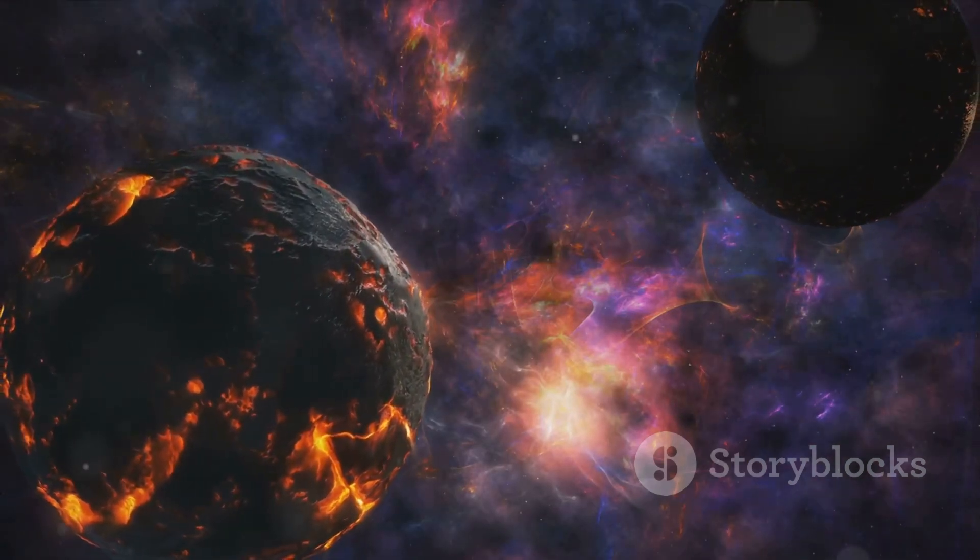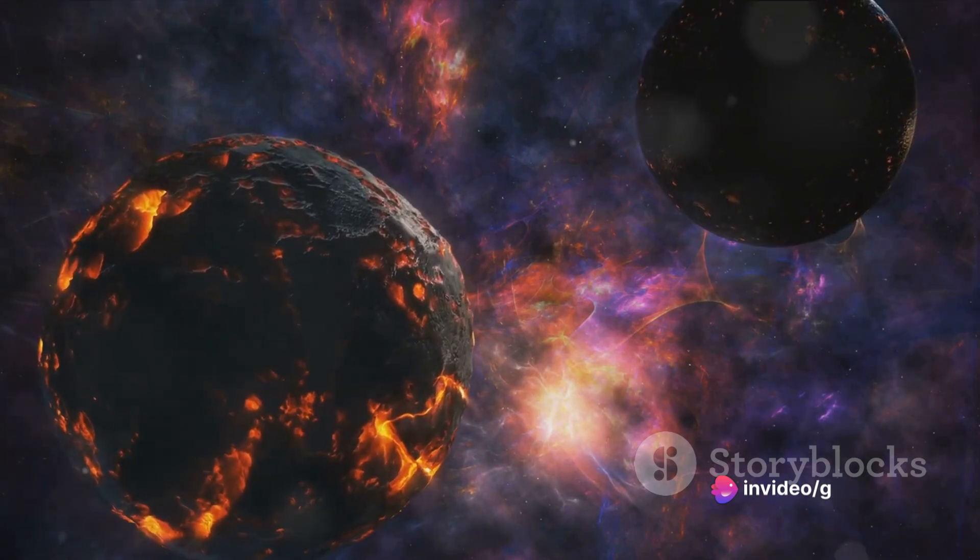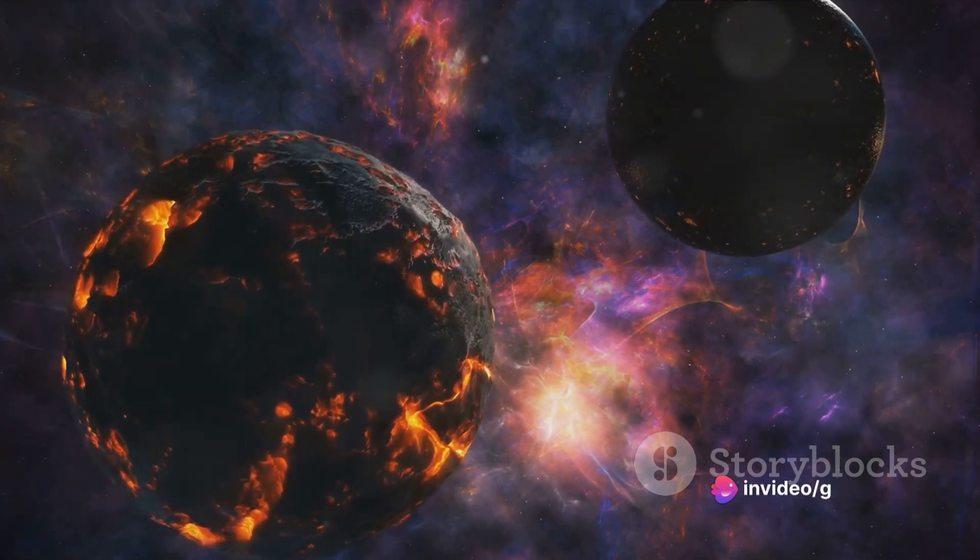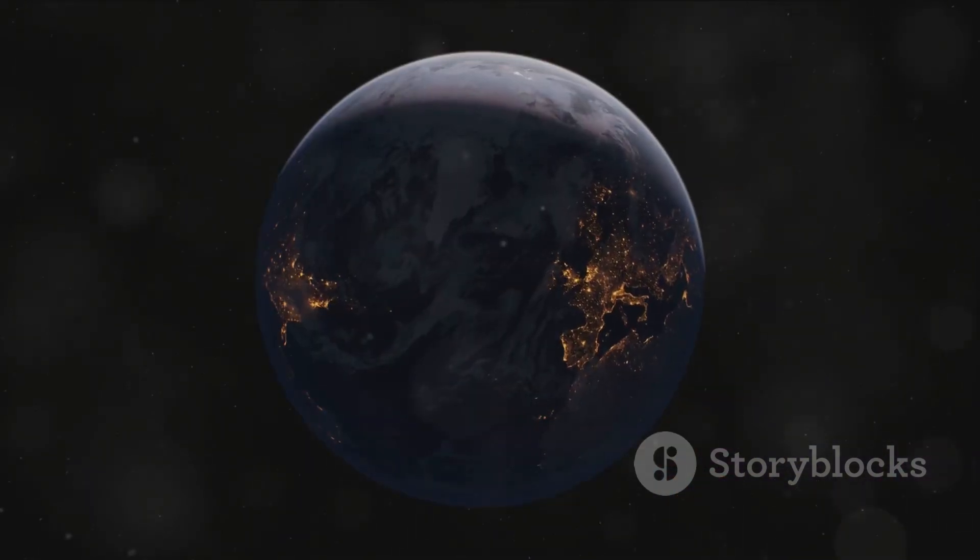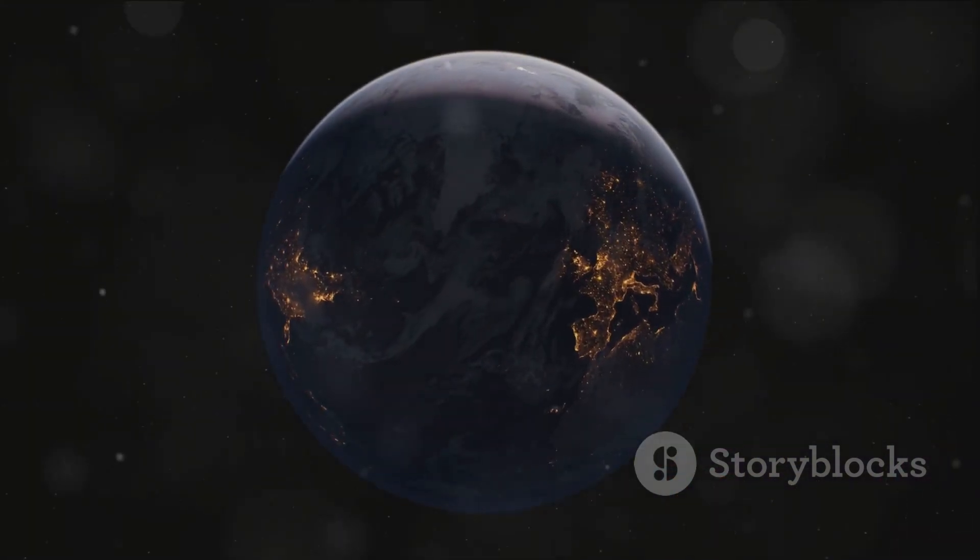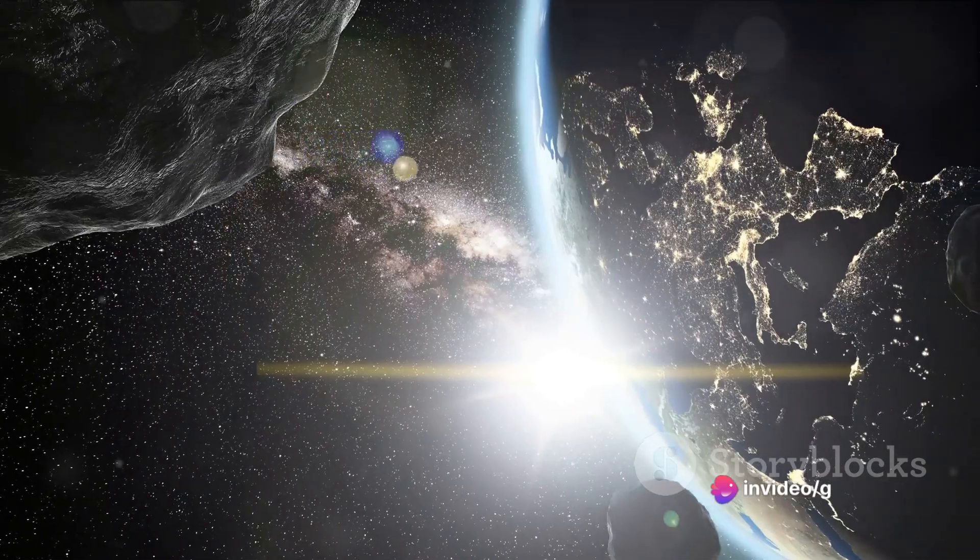Around this newborn star, the remaining material began to take shape. Dust particles stuck together, forming clumps. These clumps collided and merged, growing larger and larger, giving birth to planets. One of these emerging celestial bodies was our Earth, a rocky planet, the third from the sun.